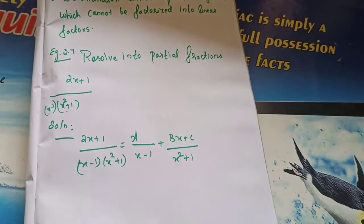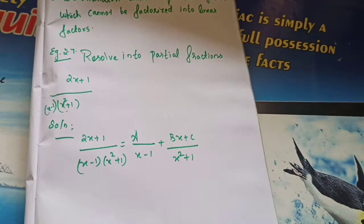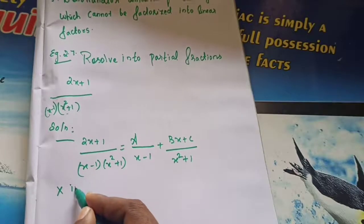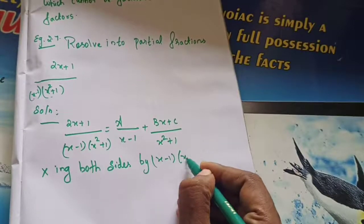This is the only difference. For non-repeated factors you write A by, B by, like that. Repeated means also A by, B by, C by. But here if the denominator cannot be factorized into linear factors — since x squared plus 1 is a quadratic that can't be factorized — you write the numerator as bx plus c. So for whichever denominator cannot be factorized into linear factors, that particular numerator you write as bx plus c. Now multiplying both sides by x minus 1 and x squared plus 1.